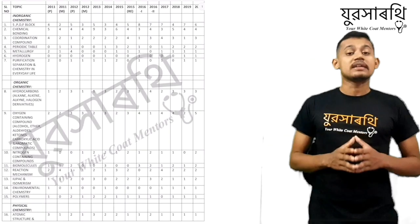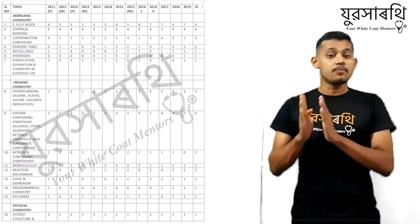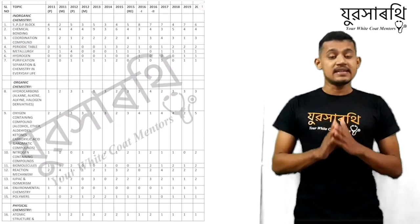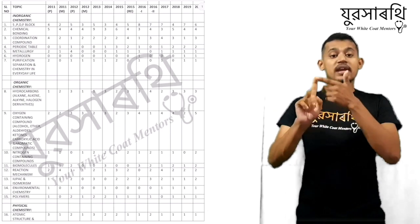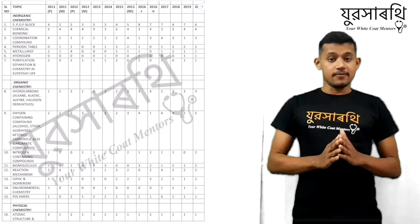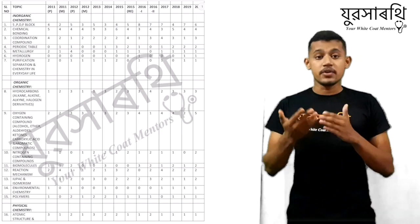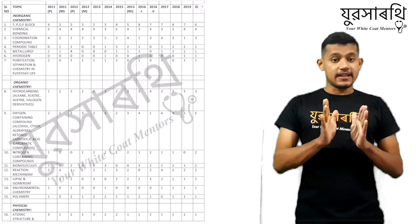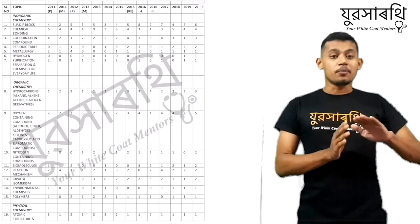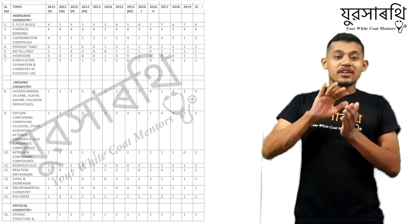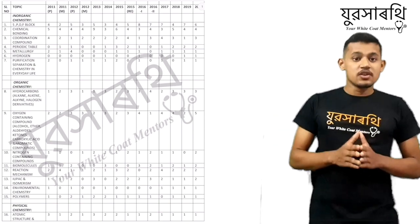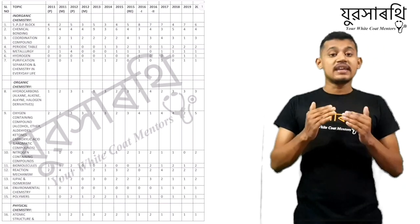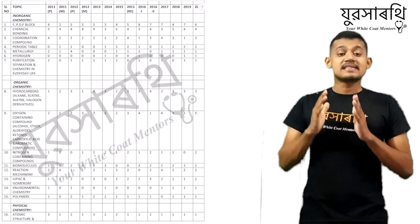We all know that the chemistry of class 11 and 12 is divided into three portions basically — that is inorganic, organic, and physical. They are divided according to their own properties and characteristics. I am going to cover inorganic, organic, and physical separately.